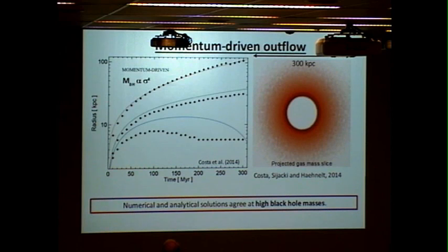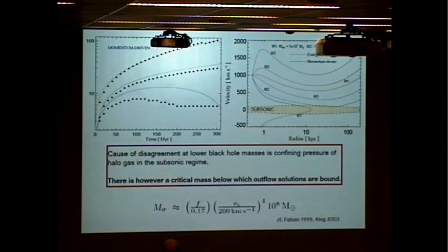In the momentum-driven outflow, what you see is for high black hole masses, this is the case for 5 times 10 to the 8 solar masses, the agreement is very good. Interestingly, what happens at lower black hole masses is that it diverges from the analytical solution. In the case in which the black hole mass is too low to drive an unbound shell, the numerical simulation qualitatively does the same thing, but quantitatively not exactly.